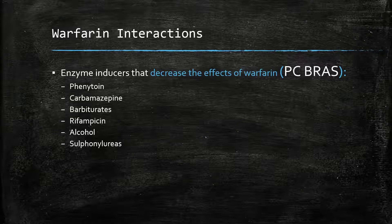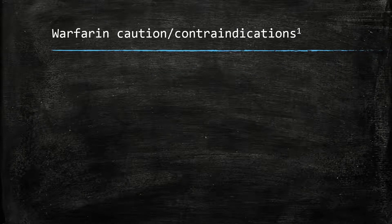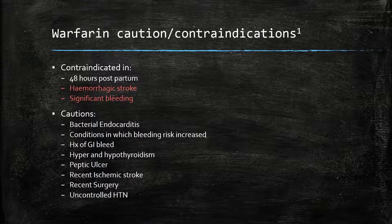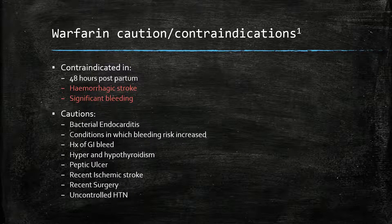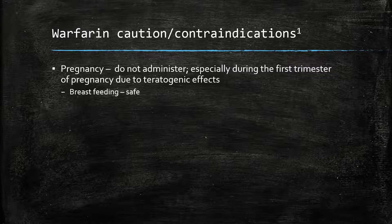Warfarin is contraindicated in certain situations such as 48 hours postpartum, in haemorrhagic stroke, and in significant bleeding. It is used with caution in bacterial endocarditis, any condition that increases bleeding risk, a history of GI bleed, hyper- and hypothyroidism, peptic ulcer disease, recent ischaemic stroke, recent surgery, and uncontrolled hypertension. Warfarin is also contraindicated in pregnancy due to teratogenic effects, but is safe for breastfeeding. Avoid in hepatic and renal impairment.